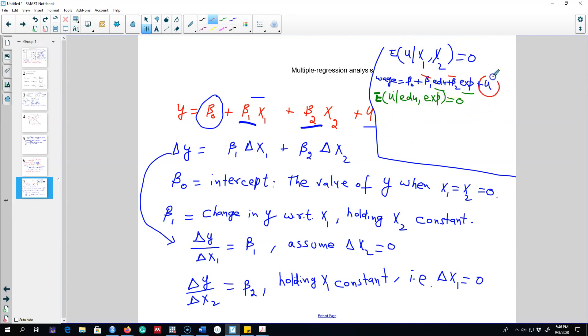For example we may think about a factor called ability. Wage is a function of education and experience but we also know that wage is determined by ability of individuals. What we are assuming here is that ability is uncorrelated with education and experience.